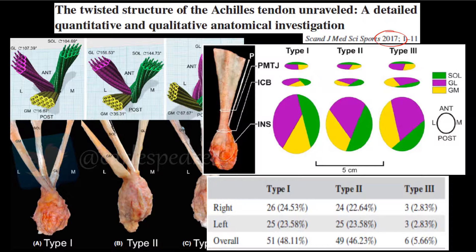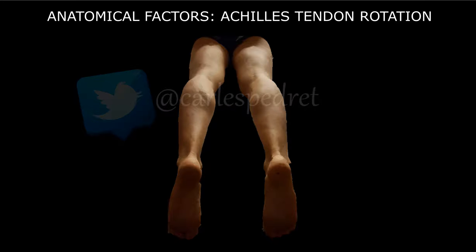We can see the distribution of type one, type two, and type three, and they found that type one and type two are the most frequent in normal exploration. You might think this is quite theoretical knowledge about ultrasound or anatomy with no meaning in clinical practice, but yes, we can find some applicability. We have to know that in ultrasound we can follow all these rotations.